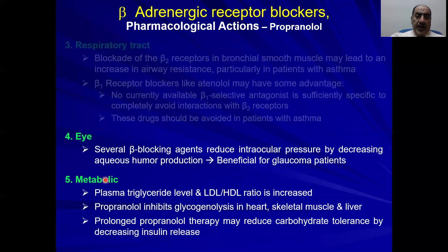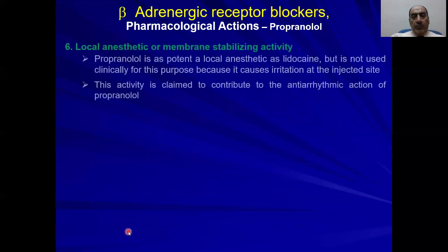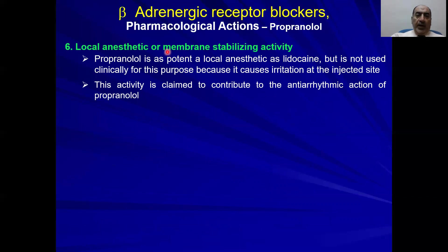The metabolic effects: beta blockers increase triglyceride levels and the LDL-to-HDL ratio. They inhibit glycogenolysis — the sympathetic nervous system normally activates glycogenolysis to provide glucose. Beta blockers inhibit glycogenolysis in the heart, skeletal muscle, and liver. They also reduce carbohydrate tolerance by decreasing insulin release, which is a concern especially in pre-diabetic patients. The membrane-stabilizing or local anesthetic activity contributes to the antiarrhythmic effect of propranolol, even though it is not used topically due to being an irritant.